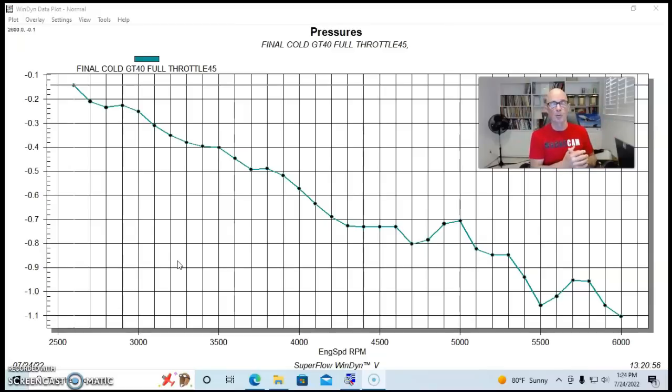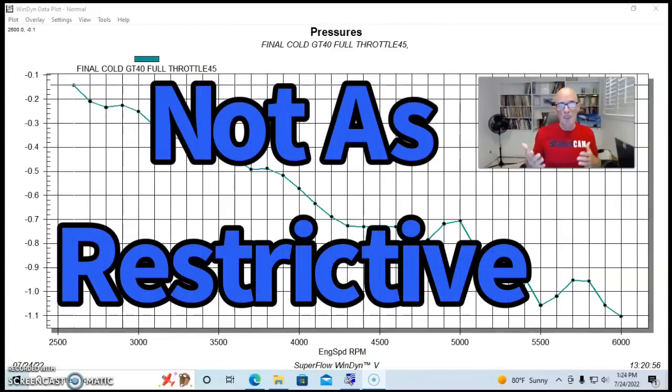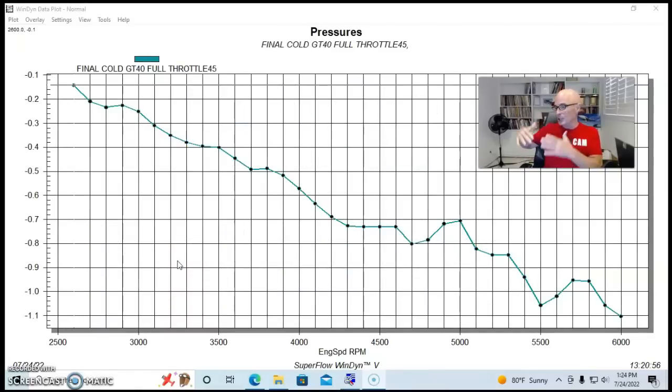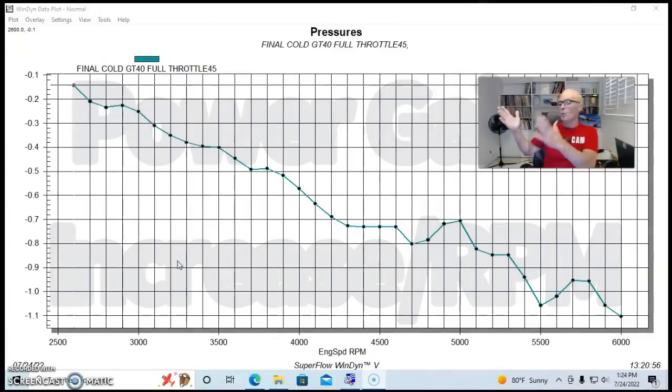So the partially open throttle body was not nearly as much of a restriction, but as the airflow demand increased, we saw a bigger difference in power at the top of the rev range where more and more airflow is needed. And like I said, this is something that we always see when we have a change in throttle body size. For instance, oftentimes we'll see very little power down low, and then more and more power as we go up as engine speed and airflow demand does increase.